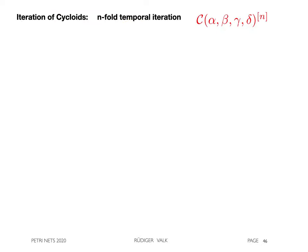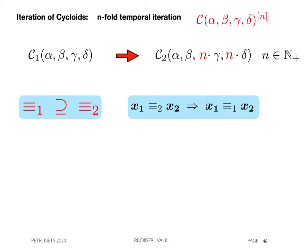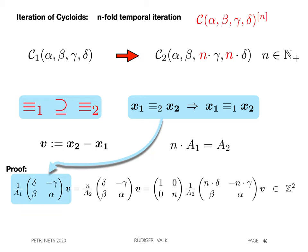Next, we consider the n-fold temporal iteration of a cycloid. It is obtained by multiplying gamma and delta with a positive integer n. Its equivalence relation is a subset of the original equivalence relation. The area capital A2 is the n-fold of area capital A1. The inclusion is proved by cycloid algebra again. The resulting vector for cycloid 1 has integer values, as this is the case for the resulting vector of cycloid 2.